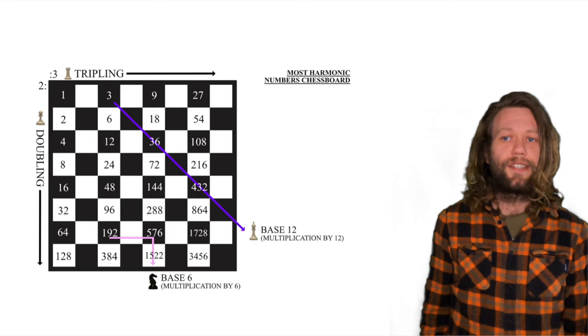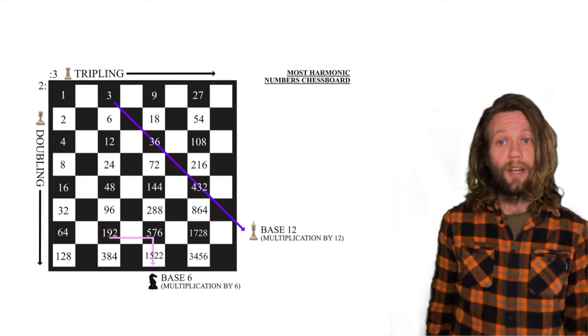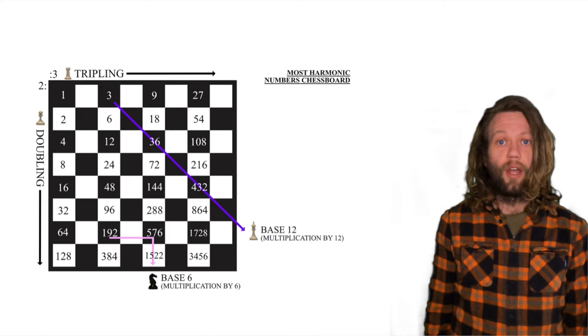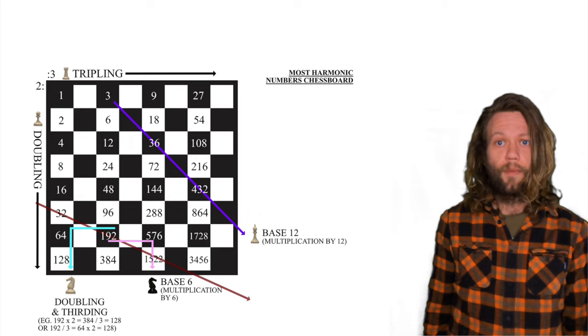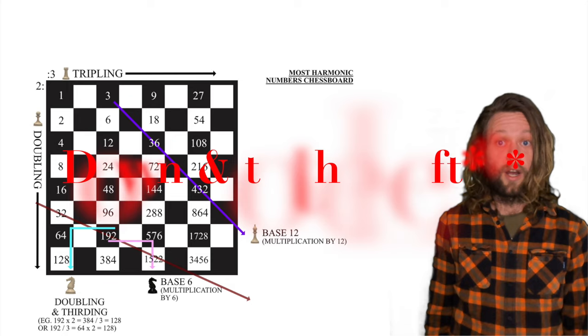If now we instead take the movement pattern of the knight to the right and down we can find a sequence of numbers linked through this pattern by multiplication or division by six inversely. Counting the squares moved on the horizontal and vertical we can again find the ratio of three to two, the perfect fourth. I refer to this alternative operation that can be formed by the knight if we move it to the right and down as doubling and thirding or inversely tripling and halving. Someone let me know if there's other terminology out there already for this.